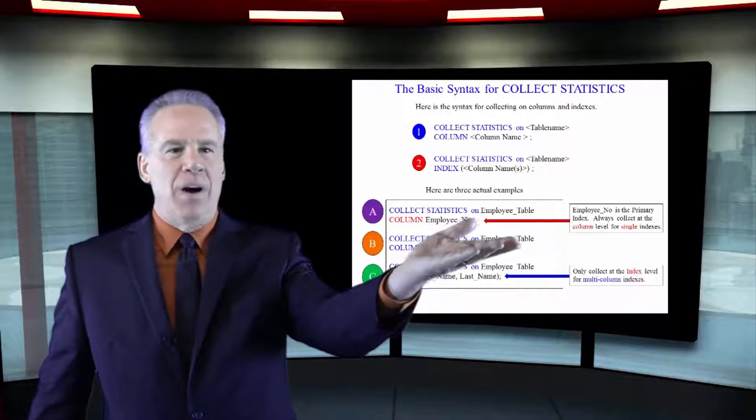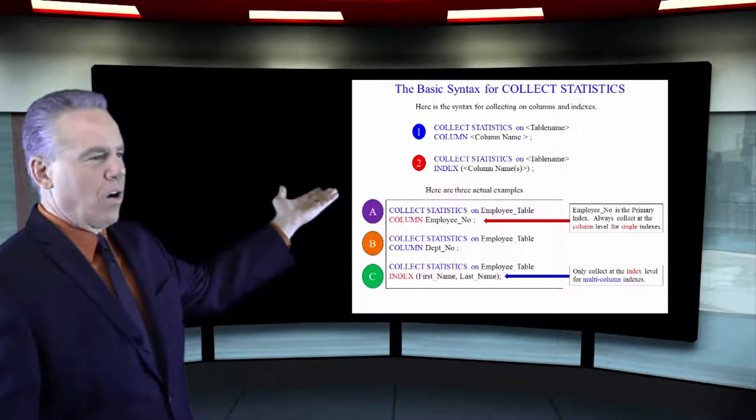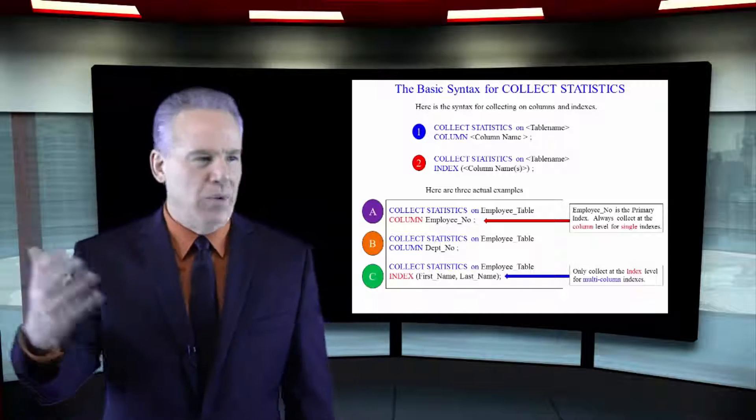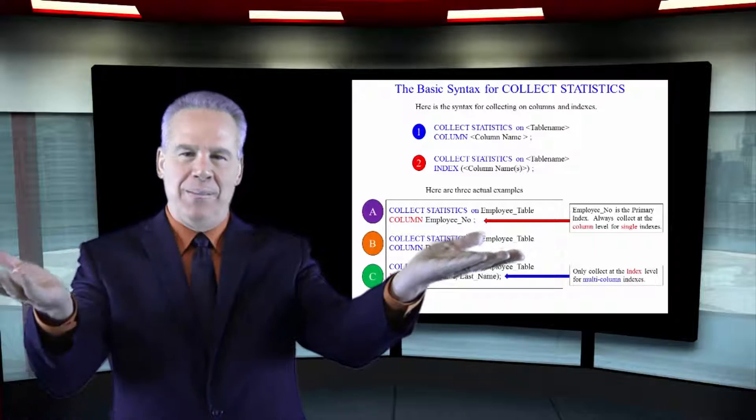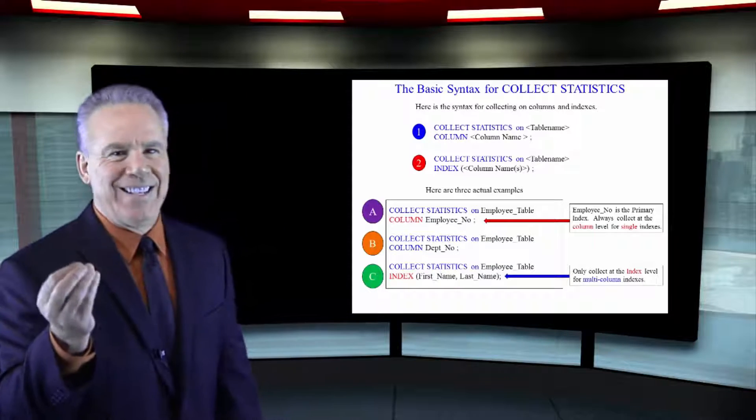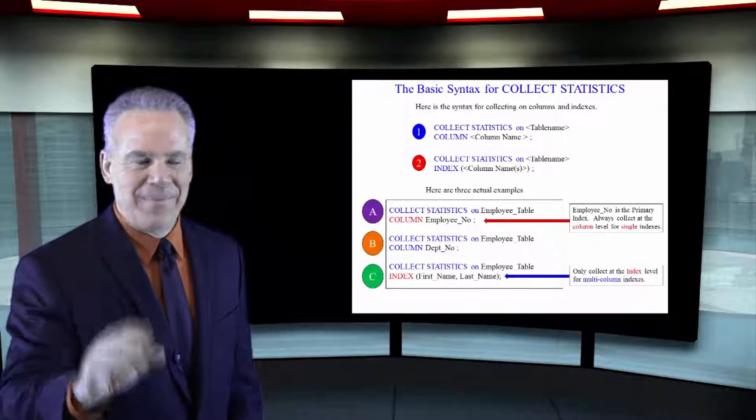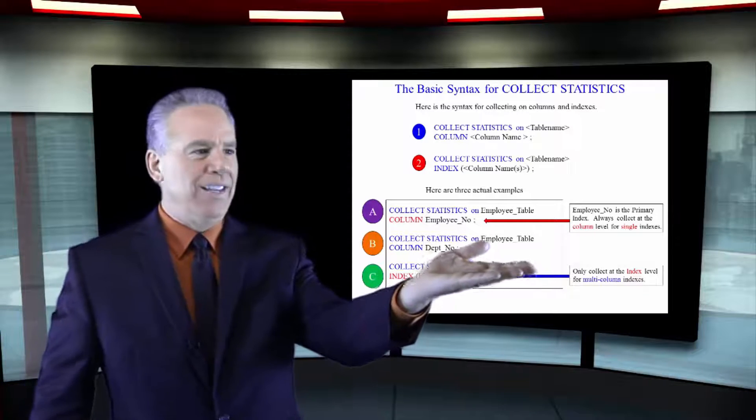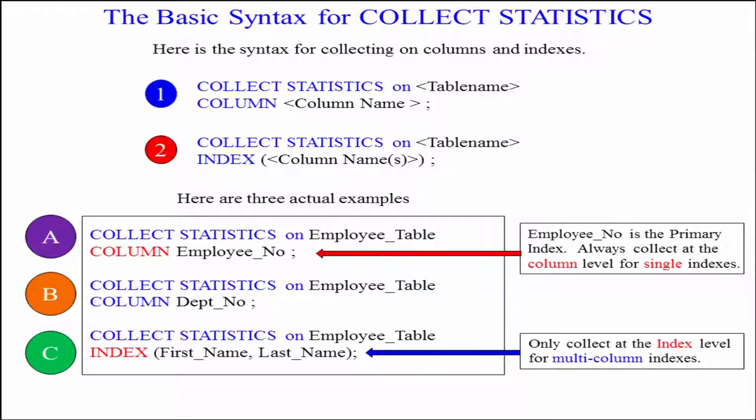As you can see above, one and two are our examples. Collect statistics on table name, column, column name. That's collecting statistics at the column level. Here's collecting at the index level. Collect statistics on table name, index, open paren, and whatever column is the index.